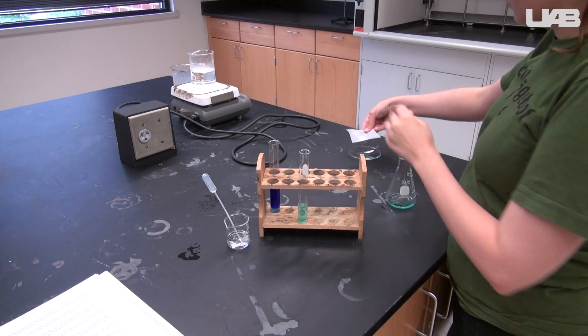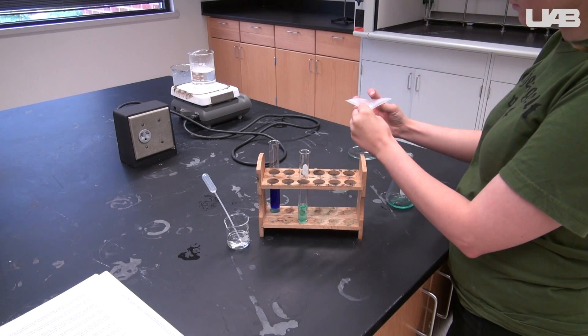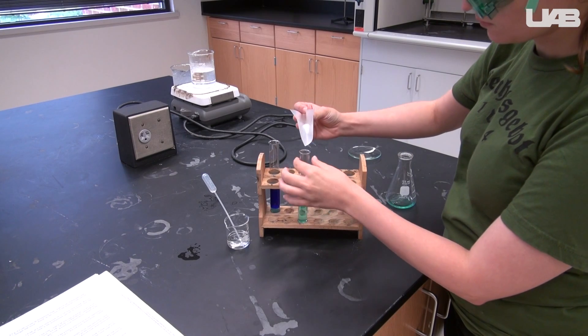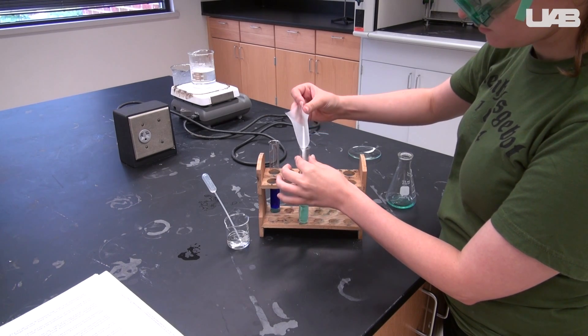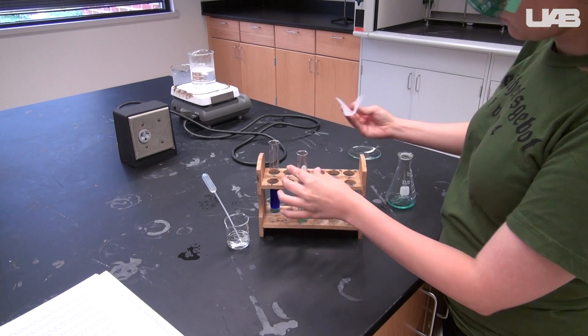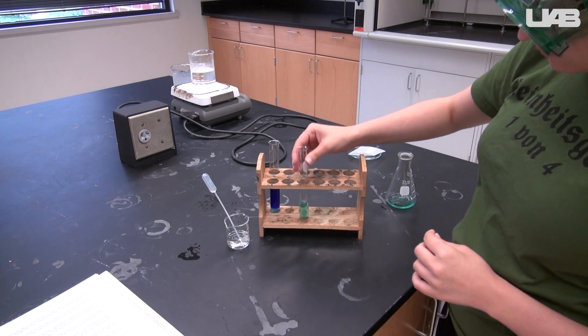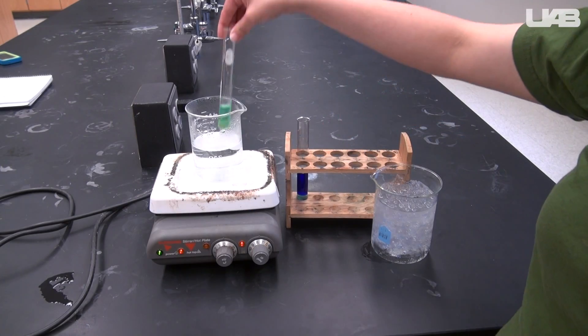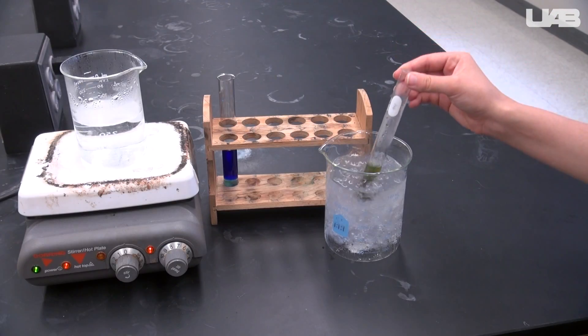Get another test tube and pour 5 milliliters of your copper bromide solution into it. Add 1 gram of potassium bromide to the solution. Record your observations and decide what the dominant species is. You will place this test tube in a hot water bath and then in an ice water bath.